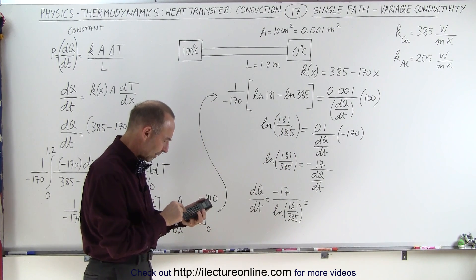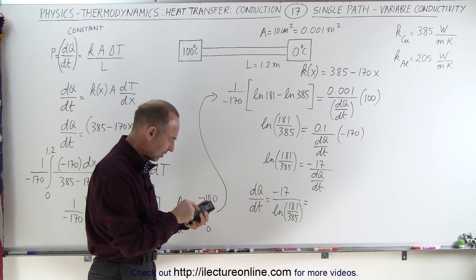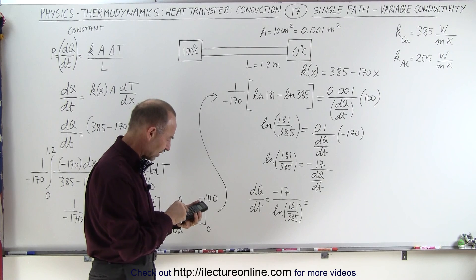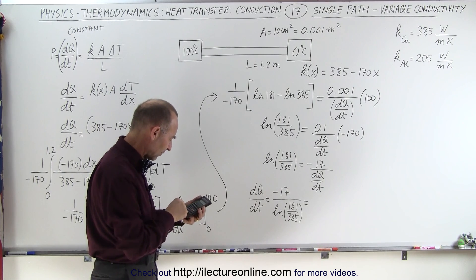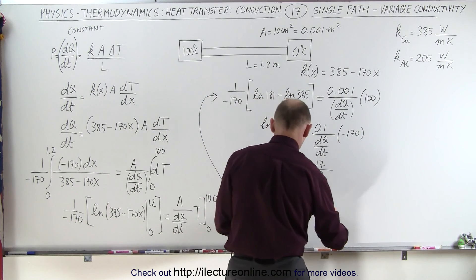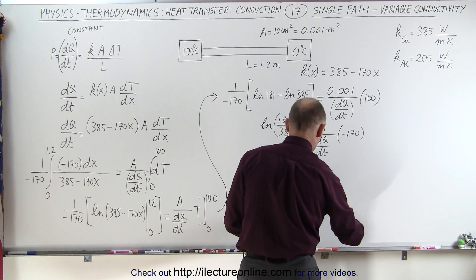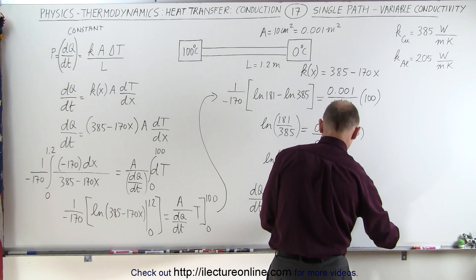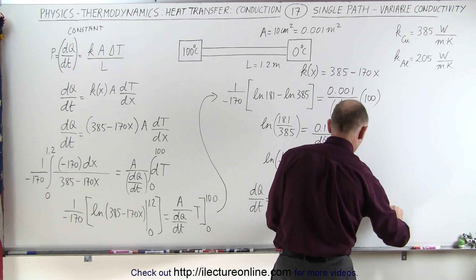So 181 divided by 385, take the natural log of that, which is a negative 0.75, and we divide that into the 17. So now we know that this is equal to dQ/dt is equal to 22.52 watts.